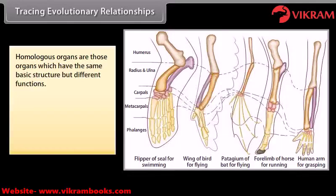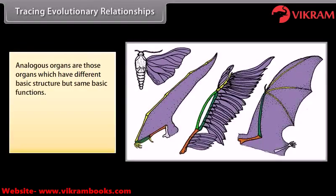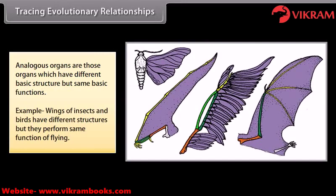Homologous organs have the same basic structure but different functions. For example, the four limbs of a frog, bird, and man are built from the same basic bone design but perform different functions like jumping, flying, and grasping. Analogous organs have different basic structures but the same basic functions. For example, wings of insects and birds have different structures but both perform the same function of flying.